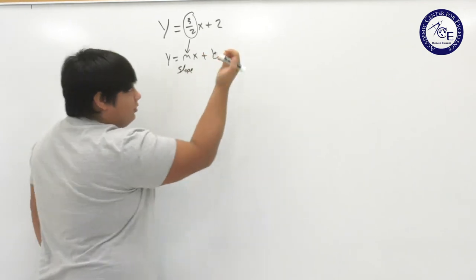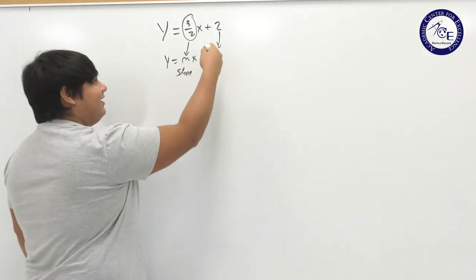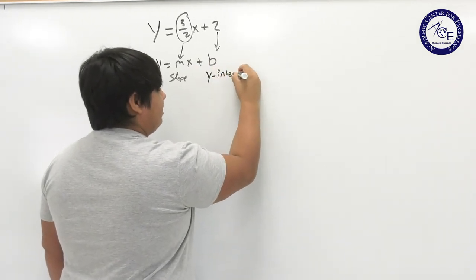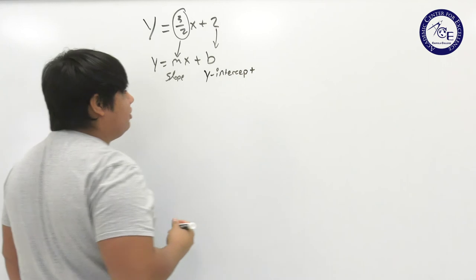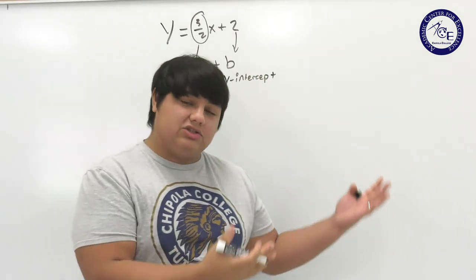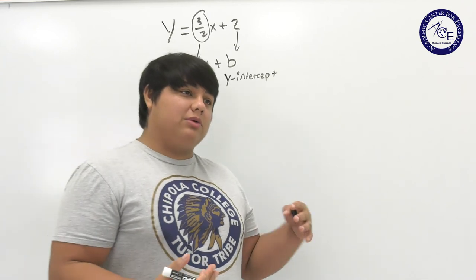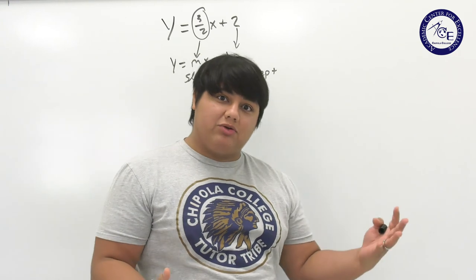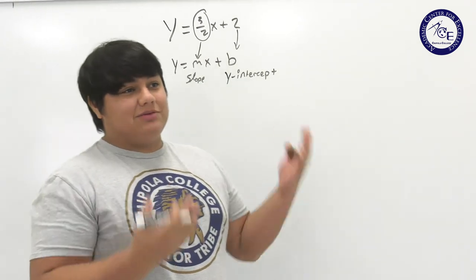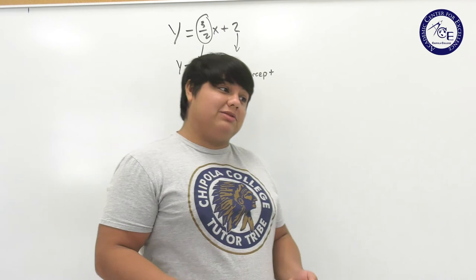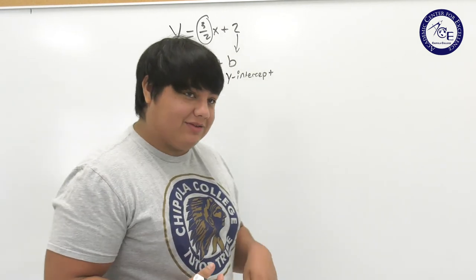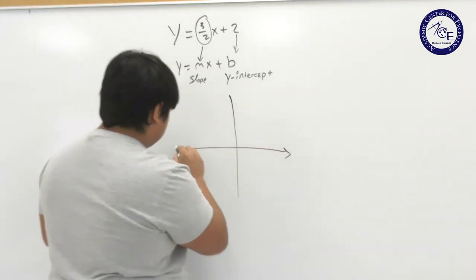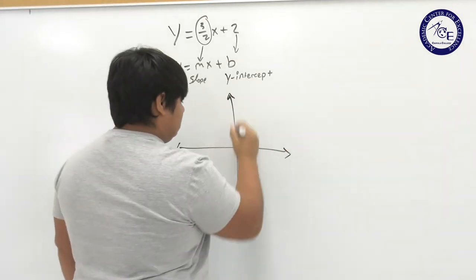The slope tells us essentially, just like the slope of a hill, whether we're rising or going down and how steep we're doing that. We know that at very steep slopes it's hard to walk up - those numbers tend to be higher. And then our y-intercept, if we were to graph this, tells us where we are crossing the y-axis.